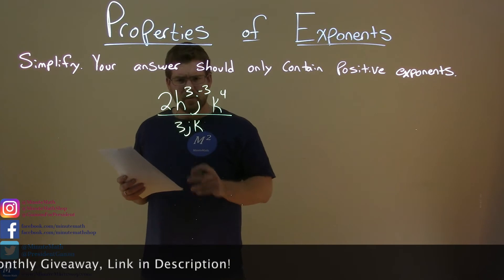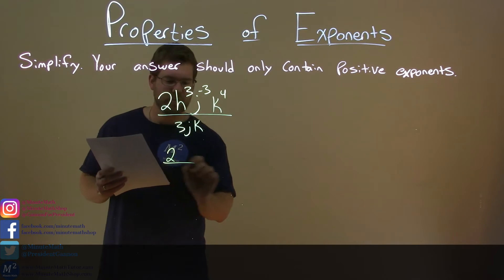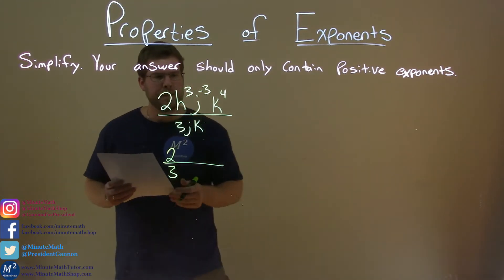So let's look at our coefficients. Two-thirds - well, 2 divided by 3 is two-thirds. Can't simplify that anymore. Let's keep going.